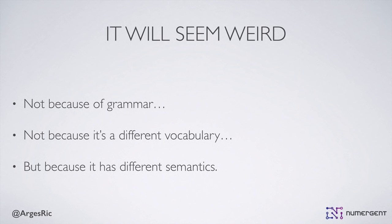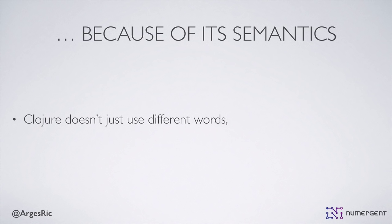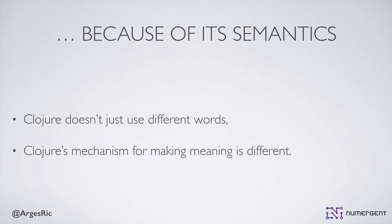Semantics are how you make meaning. Clojure is going to be different not just because it uses different words, but because the mechanism through which Clojure makes meaning is different from that of object-oriented languages. You're not necessarily going to completely absorb this until you sit down and try to write some relatively straightforward pieces — that's the point at which it's going to really click that you need to think in a different way in Clojure.